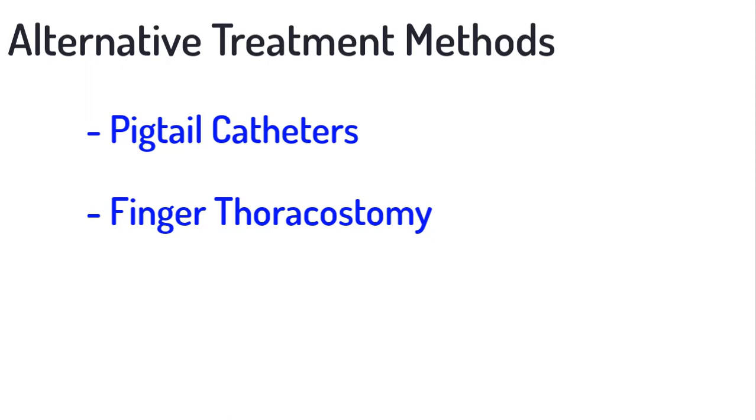You should be aware that variations on the treatment modalities discussed here do exist, but are outside the scope of this module. These include, but are not limited to, the use of pigtail catheters for small pneumothoraces, finger thoracostomy for emergent cases, and the use of thoracic vents as a means to preserve the patient's ambulatory capacity.